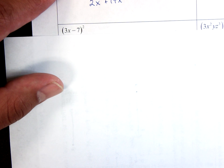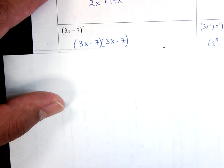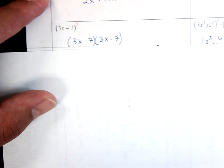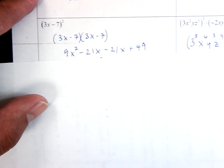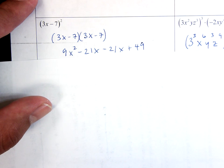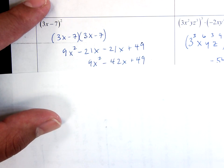3x minus 7 squared, again I think it's easier just to rewrite the problem as 3x minus 7 times 3x minus 7. That's what it means to square something. And then when I multiply it out, I'll get 9x² - 21x - 21x + 49. Combine your like terms and you get 9x² - 42x + 49.